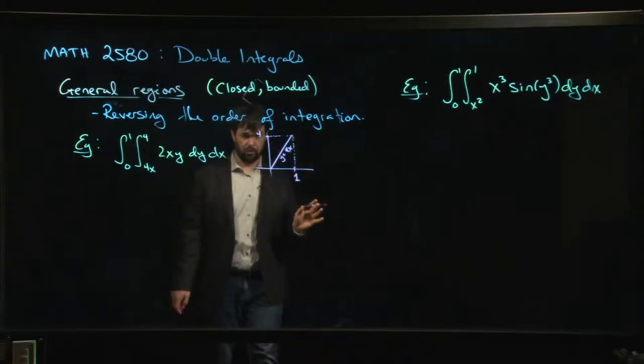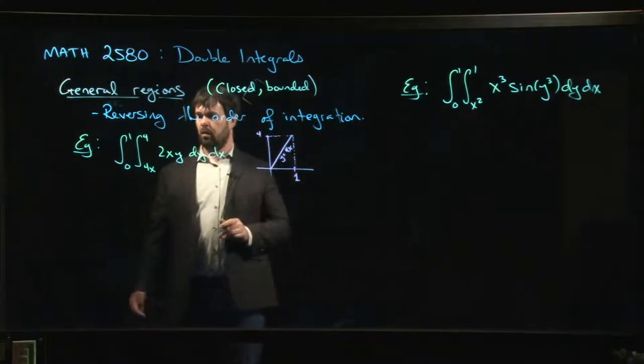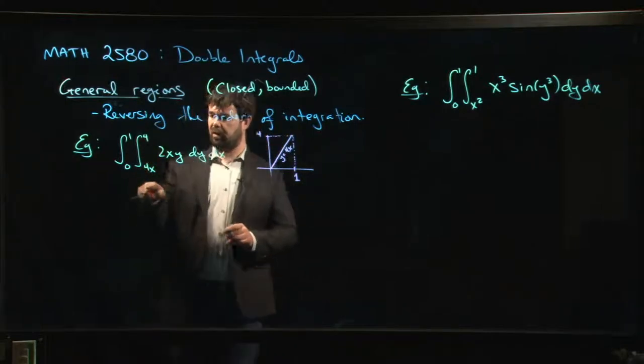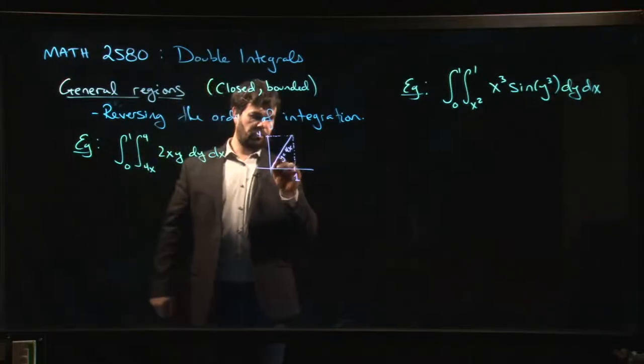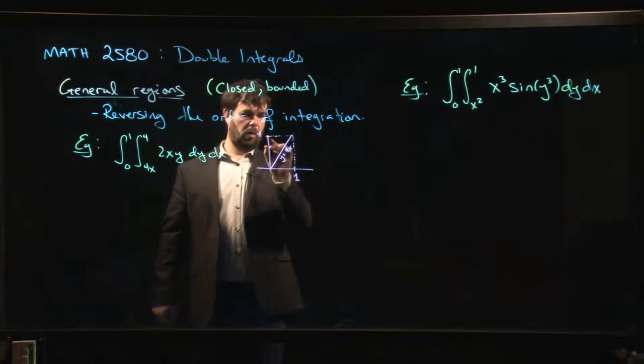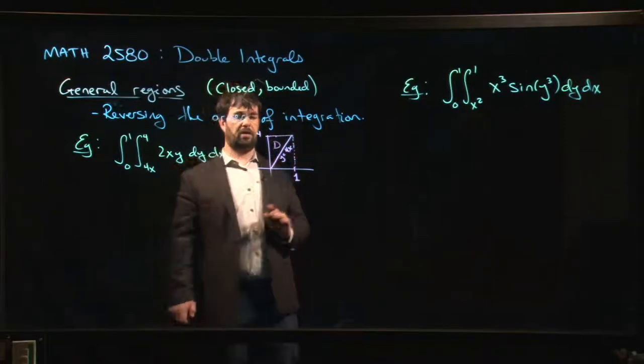Now you can probably see that there's this rectangle here and the line y equals 4x is going to divide that rectangle into two triangles. Which triangle are we taking? Well, these limits say that 4x is the lower limit for y. Y starts at 4x, goes up to 4. That means that this is our region here. It's the region above the line.